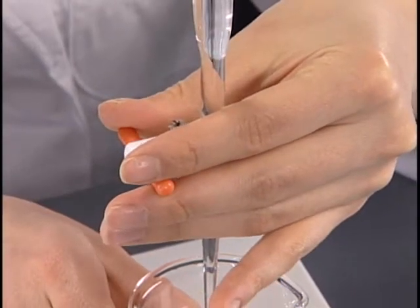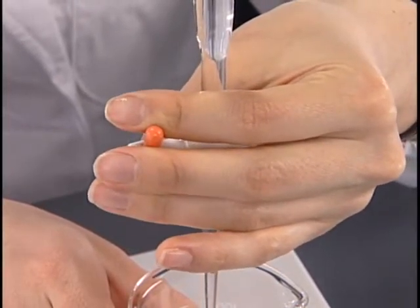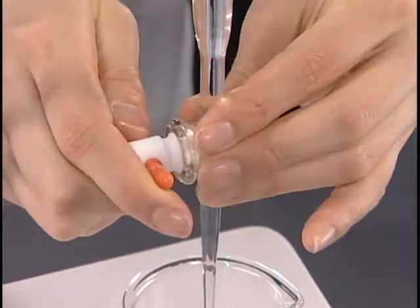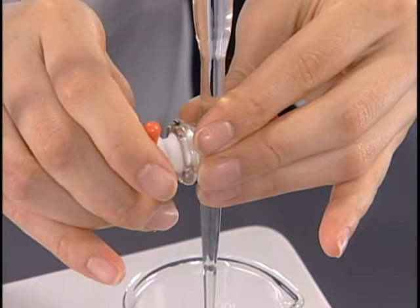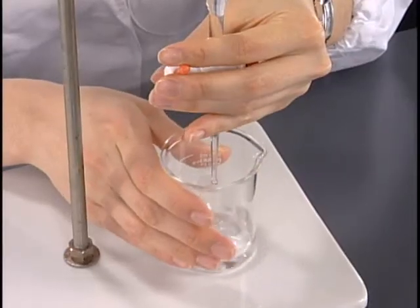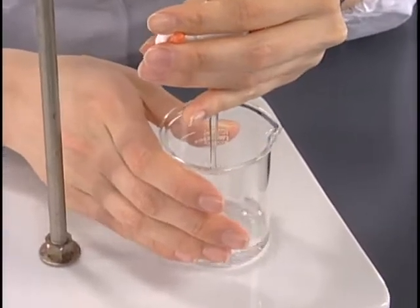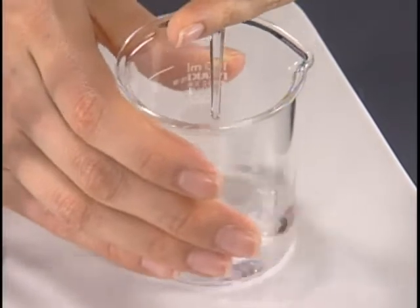Handle the stopcock with left hand to add the titration solution. Alternatively, one can handle with both hands. Shake the vessel to make the sample solution homogeneous during the addition.